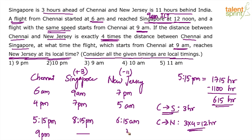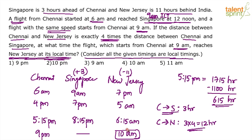We reach New Jersey at 9 pm Chennai time. To find New Jersey's local time, subtract 11 hours. 9 pm is 2100 hours. 2100 minus 1100 is 1000 hours, which is 10 am. So the answer is 10 am — option 4.